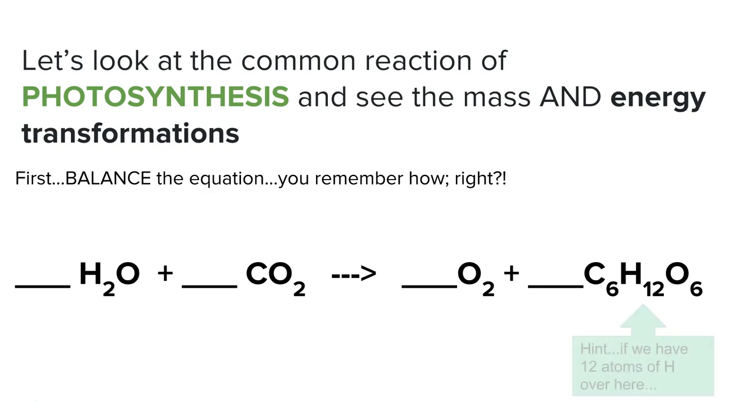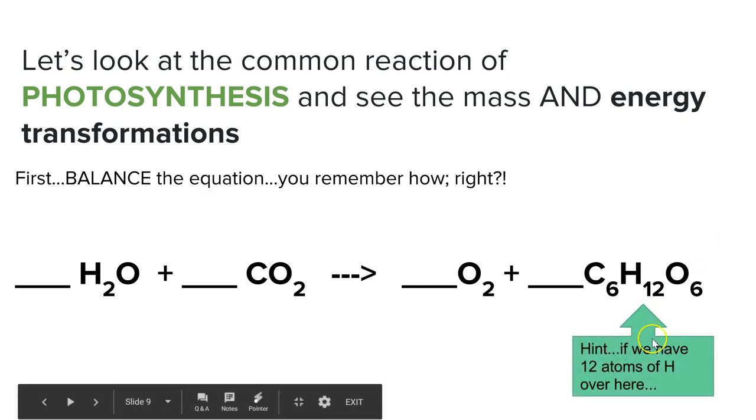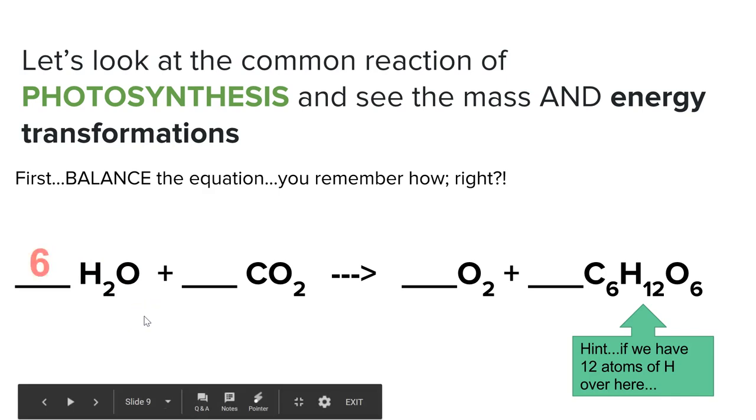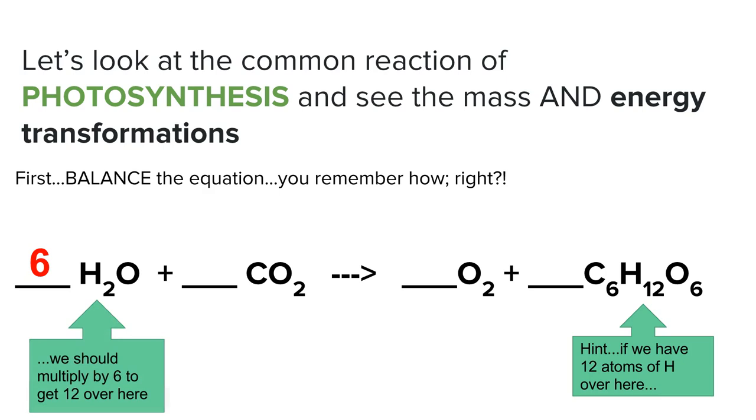So to balance an equation, let's see. We have 12 atoms of hydrogen over on this side. What do we need over on this side to balance it out? What times 2 is 12? Oh yeah, 6. We should multiply by 6 to get 12 on that side. Do you remember how to finish it out? Go ahead and give it a quick try.